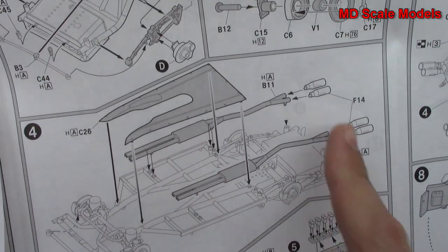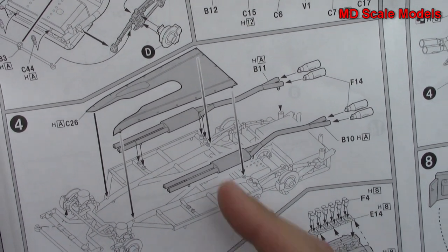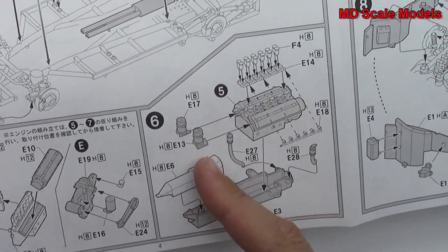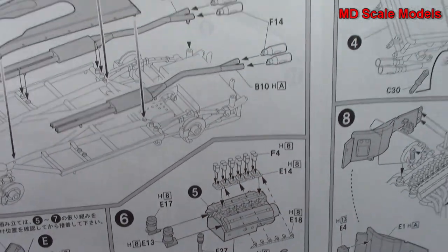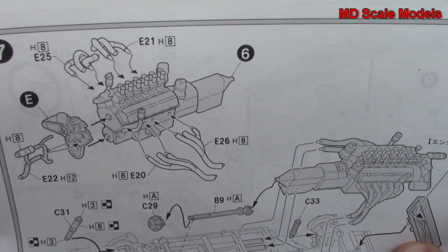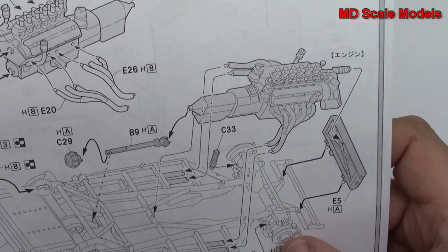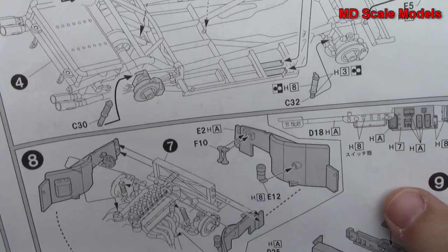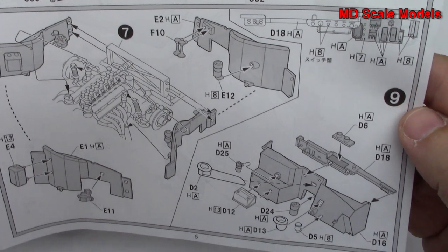We have our exhausts and muffler there, and start to build our engine. Those are nice little carburetors there, put our exhaust headers on. That's then mounted with the suspension in the engine bay. Build the engine bay around it there.